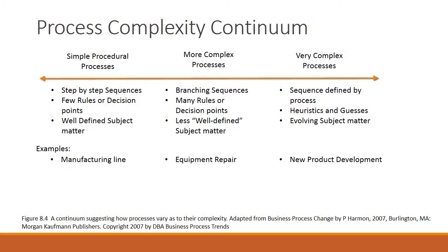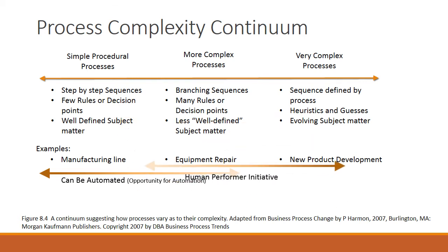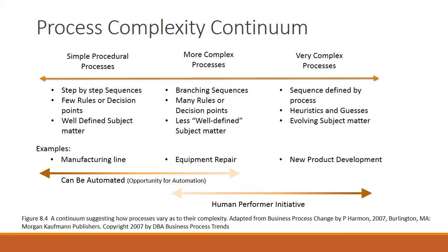As we evaluate the complexity of processes across the continuum, Figure 8.4 highlights the automation opportunities that may exist for the processes on the left side of the continuum. For those processes that are simple or have few decision points and branches, automation is a real opportunity for process improvement. I would add an additional notation to Figure 8.4 — that of the Human Performer Initiative. As processes become more complex, the need for a human performer and knowledge is increased.